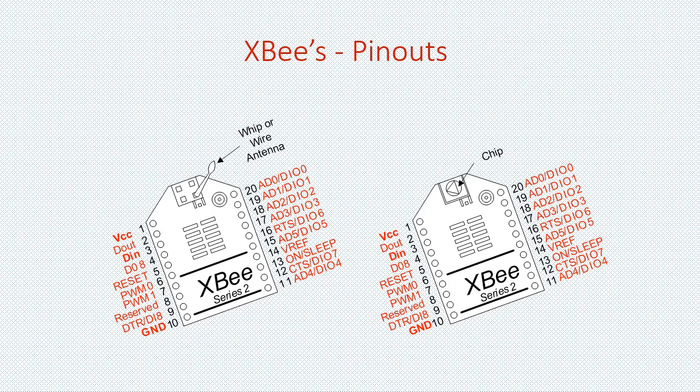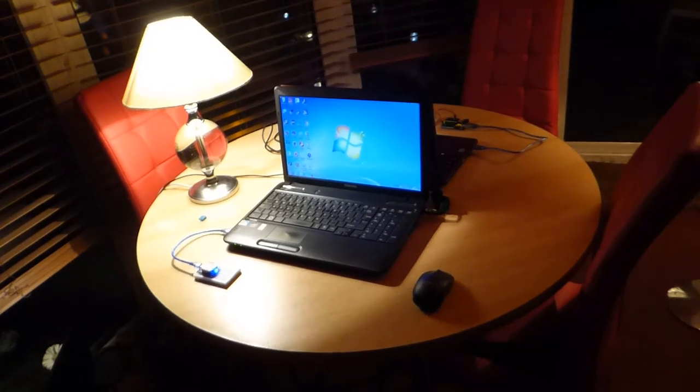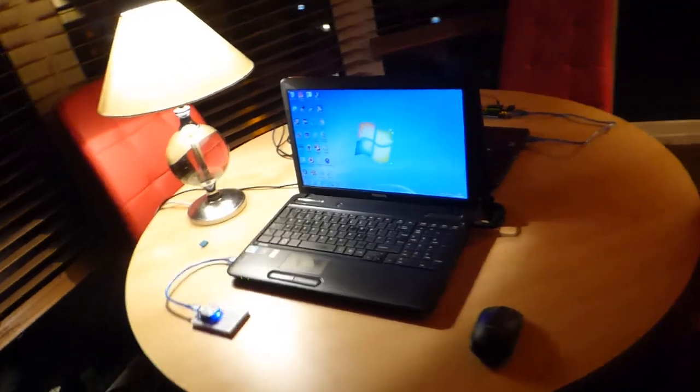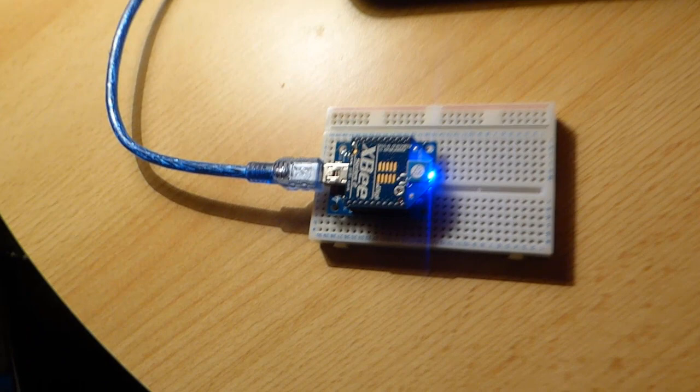The voltage input is provided by the cable attached to the XBee. So I only need to attach a cable from the transmitter port — pin 1 — to pin 3, data in, on the XBee, and we're done. This is almost the final setup. On this side of the table, the laptop is connected to the coordinator XBee.